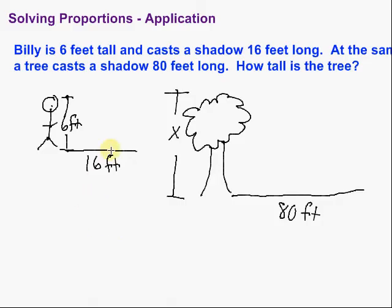So we need to set up a proportion. And there are actually four different ones that we could set up. The key is that we need to be consistent. So let's say I want to use Billy's stuff first. So if I do 6 over 16, the 6 is Billy's height. The 16 is the shadow. So then for the tree, the 6 was the height. So I need to put the height of the tree on top. So that's going to be x. Then I put the shadow on the bottom, which is 80. Okay?